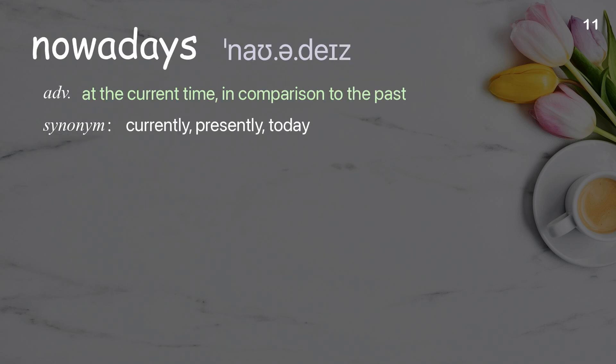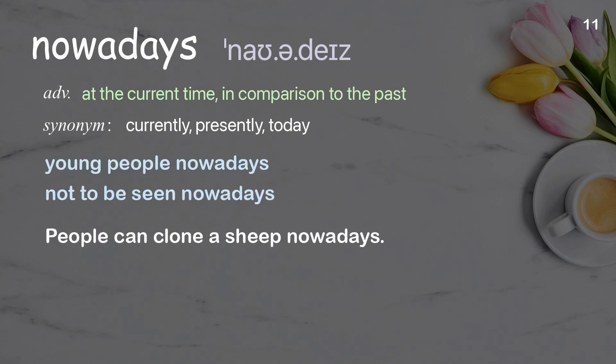Nowadays: at the current time, in comparison to the past. Examples: young people nowadays; not to be seen nowadays. People can clone a sheep nowadays.